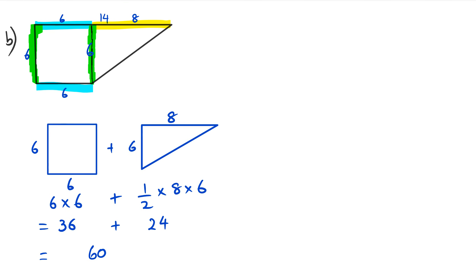This method - splitting into two shapes - is probably the easiest one. You could try creating a big rectangle and subtracting a triangle, but you'd still be doing the same steps anyway. So that's basically what area of compound shapes is. There will be a follow-up to this one with circles, so keep an eye out for that.